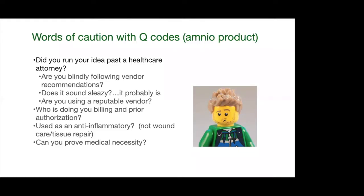The code was specifically for people who had wounds — for example, a diabetic patient who had an ulcer, patients who had wounds that wouldn't heal. You could use amniotic product to help wound care and there was a code for it that paid really well. So what doctors were doing is using the wound care code, but the diagnosis didn't match — they were injecting it in knees and shoulders and backs while using the wound care code, which is fraud. It's illegal.